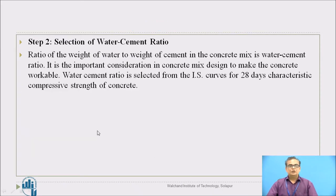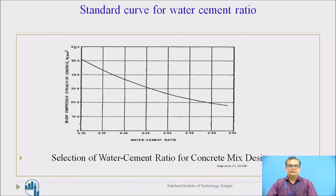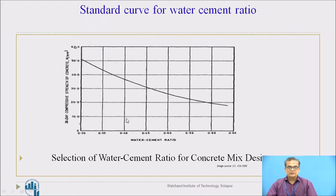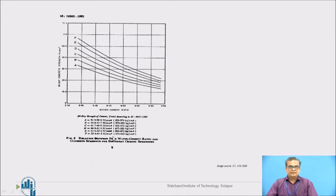Selection of water-cement ratio is the next step. Standard curves given by IS 456 are used for determining the water-cement ratio. One curve shows water-cement ratios against 28-day compressive strength of concrete, so you can choose the water-cement ratio from it. A second curve is also important, depending upon grade of cement, water-cement ratio, and concrete strength.